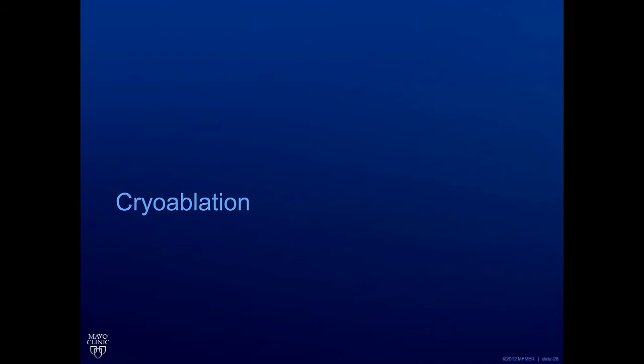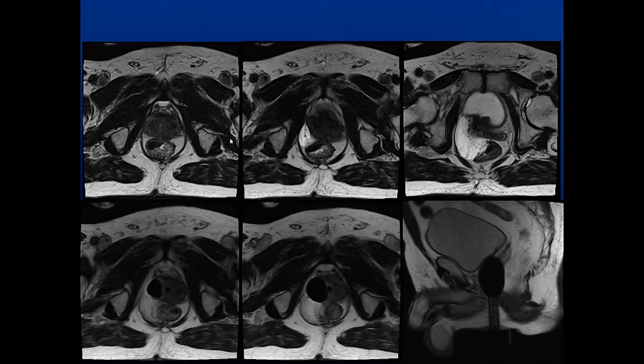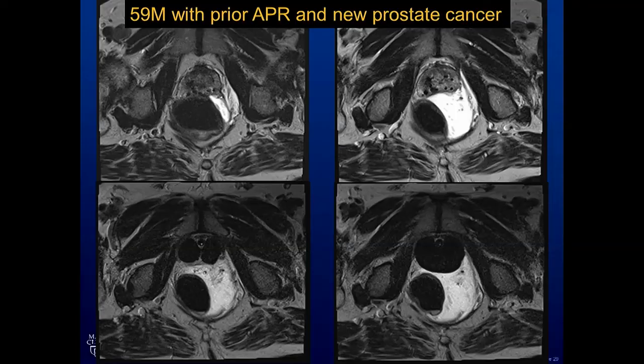Cryoablation is another modality frequently used in the prostate. Here we have a 68-year-old gentleman who has had prior radiation and has a recurrence in his prostate. One challenging feature is that the rectum is close to the prostate. We can expand that distance by injecting saline to move the rectum out of the way, allowing us to proceed with freezing the right side of the prostate, encompassing the tumor and getting rid of the recurrence.